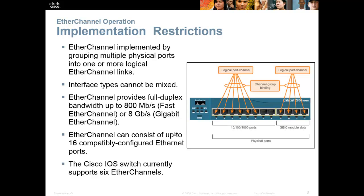There are some issues with implementing EtherChannel. The interfaces cannot be mixed — you can't have 100 speed ports and 1,000 speed ports. They all have to be the same speed and the same duplex setting. You can typically only do eight ports in a channel — up to 800 megabits per second or eight gigs depending on whether you're doing gigabit Ethernet. Each switch only allows eight ports to be added to a channel.